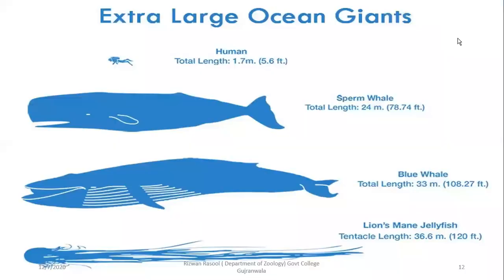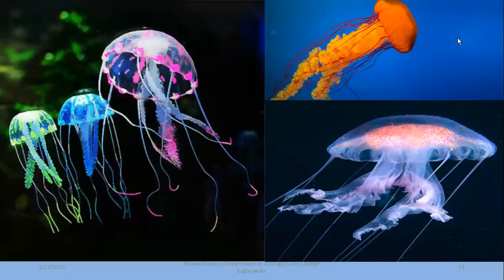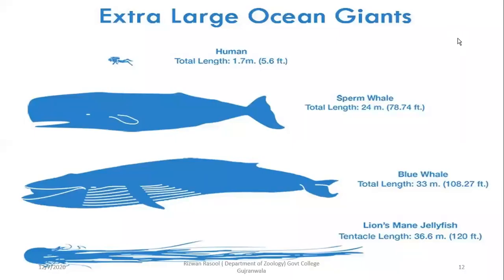These issues in common names were resolved by binomial nomenclature. Regarding jellyfish — the largest jellyfish by length is the lion's mane jellyfish, which is actually longer than a blue whale.